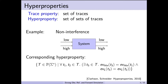A simple example of a hyperproperty is non-interference for systems that distinguish between high and low inputs as well as high and low outputs. The hyperproperty that captures non-interference is a particular set of sets of traces. For details on exactly why this captures non-interference, I refer you to the original paper by Clarkson and Schneider. For our purposes, it's enough to understand that we're interested in the preservation of hyperproperties through refinement.